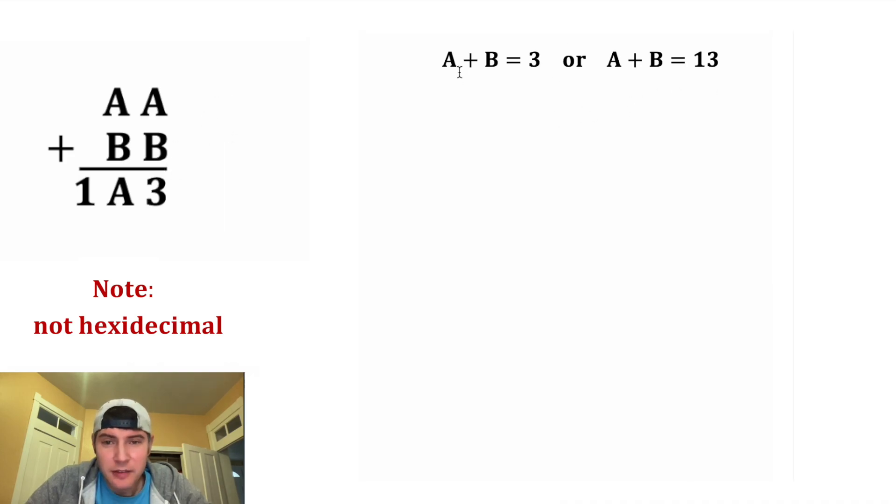Let's explore these possibilities. If A plus B equals 3, that means this A plus this B would be 3, and then in the tens place, the A plus B would also give us a 3 in the tens place. In this case, nothing will carry over, so in the hundreds place we have a 0. But we know from up here the hundreds place needs to have a 1, so it is not possible for A plus B to equal 3.